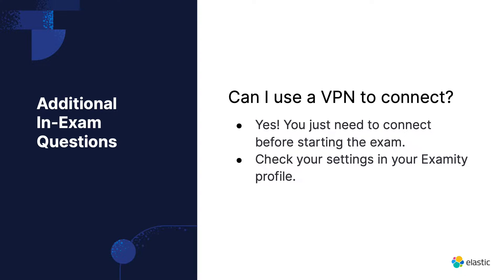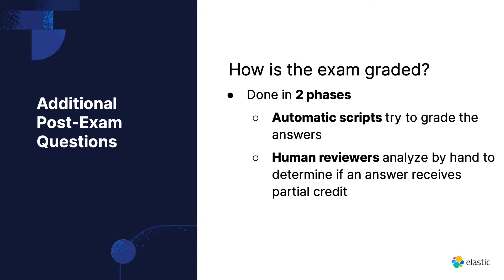Some test takers may need a VPN to log in based on their country — this is not restricted, just make sure to connect before starting the exam and test it in the Examity profile page. The exam is graded in two phases: first, automatic scripts attempt to grade the exam, then a set of human eyes reviews it to determine if a logistical error prevented scoring or if a different valid approach was used. This human component can give partial credit when automatic grading is too black and white.